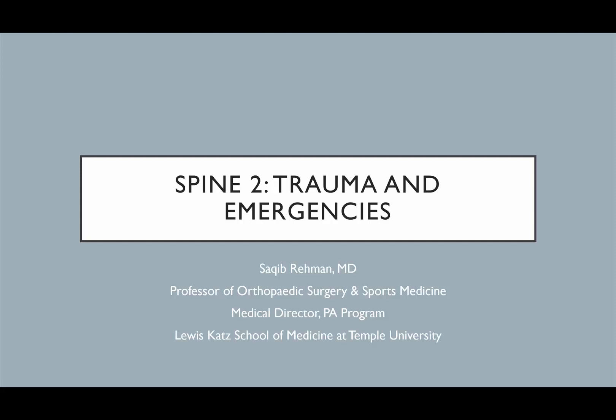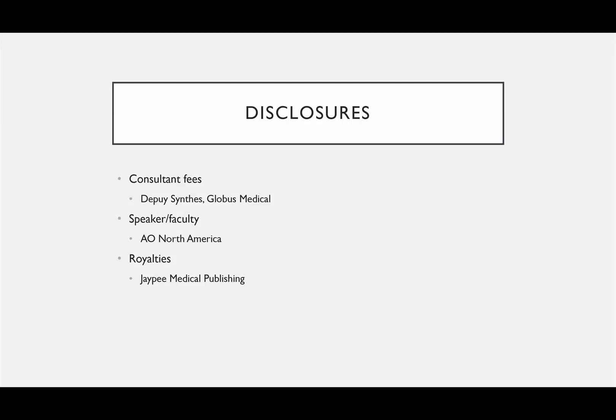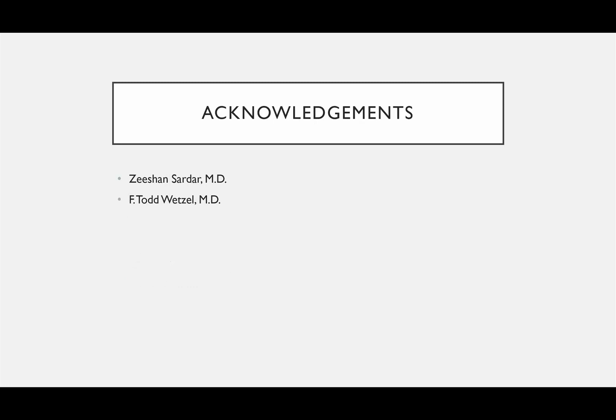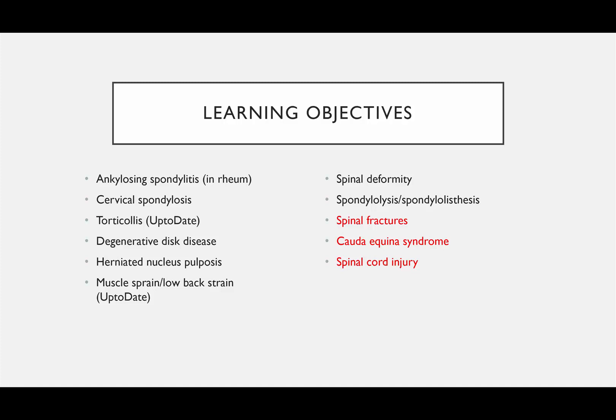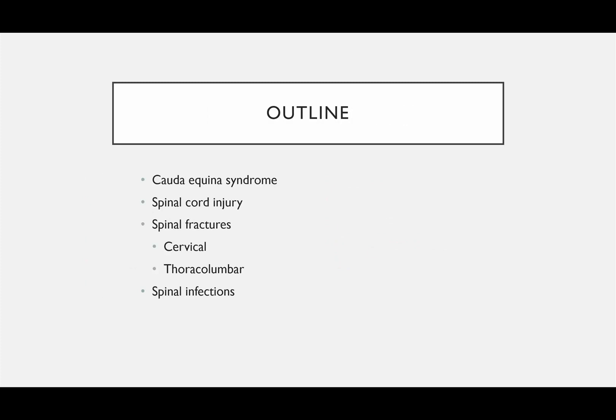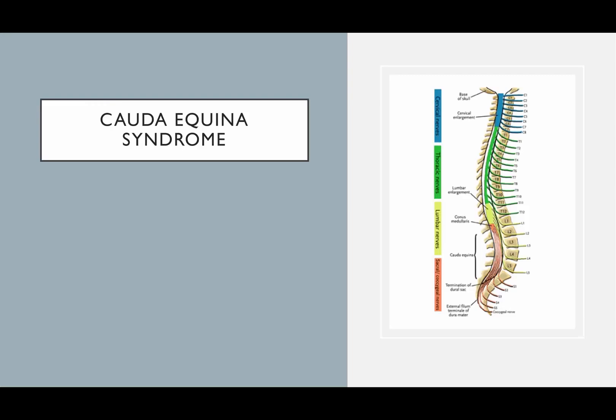This is Spine 2. We're going to talk about trauma and emergencies here. The learning objectives are that you should be able to discuss the pathophysiology, clinical presentation, differential diagnosis, diagnostic tests, surgical, non-surgical, pharmacological, and non-pharmacological treatment, prognosis, and potential complications. What we're going to cover now includes spinal fractures, cauda equina syndrome, and spinal cord injury, as well as cervical fractures, thoracolumbar fractures—particularly the thoracolumbar junction—and spinal infection.